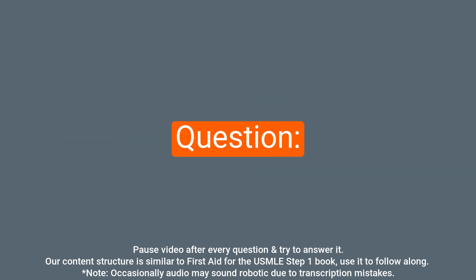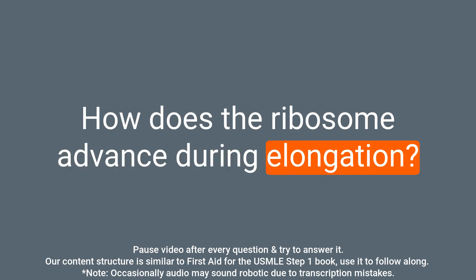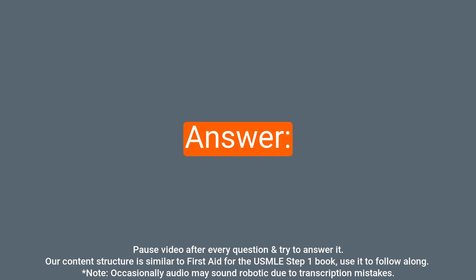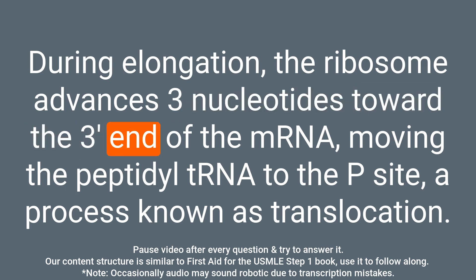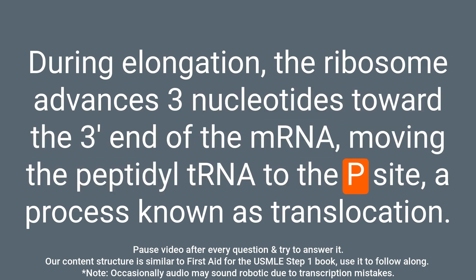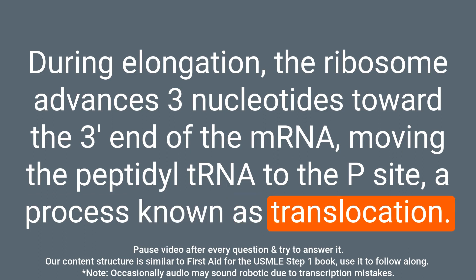Question: How does the ribosome advance during elongation? Answer: During elongation, the ribosome advances three nucleotides toward the 3' end of the mRNA, moving the peptidyl-tRNA to the P site, a process known as translocation.